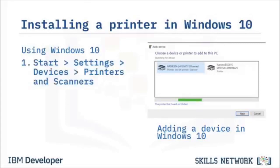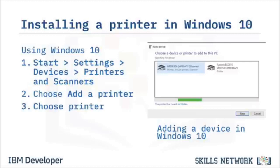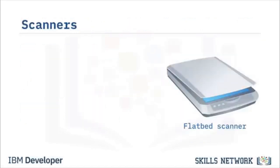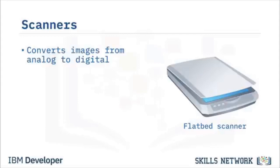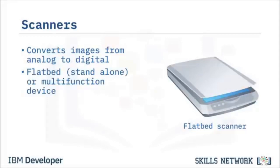To install a local printer in Windows: select Start, then Settings, choose Devices, and select Printers and Scanners. Select Add a Printer or Scanner, wait for it to find nearby printers, choose the one you want, and select Add Device. An image scanner optically scans images, printed text, or objects and converts them from analog to digital. Commonly used in offices are flatbed scanners, though these have largely been replaced by multi-function devices.